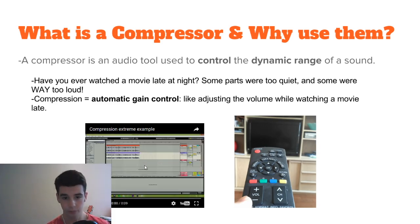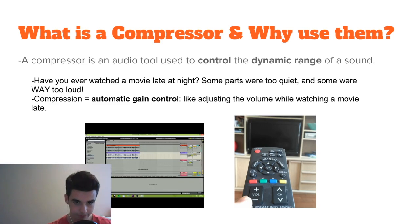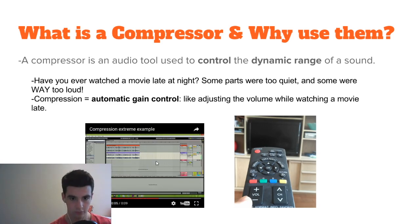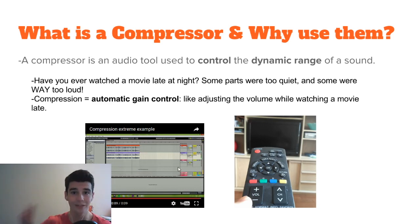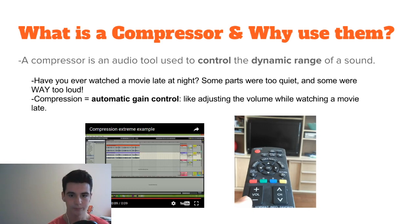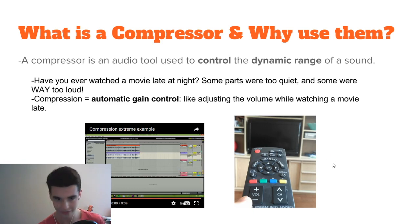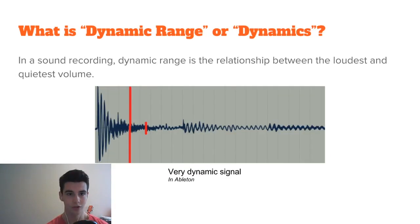So the first is uncompressed and it's a drum loop, so take a listen. As you could tell, the second one was kind of squashed and that was on purpose. Basically, that's what compression can do in extreme cases. What is dynamic range or dynamics?